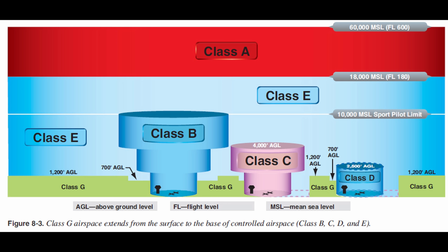You don't need specific clearance to enter the Delta. All you would need to do is call the tower - something like 'asset tower 11, 30 miles to the northeast, looking to land helipad Charlie' - and the controller would reply with your call sign, Roger, or instruct you to continue bound and make approach straight in. That constitutes your approval to enter.